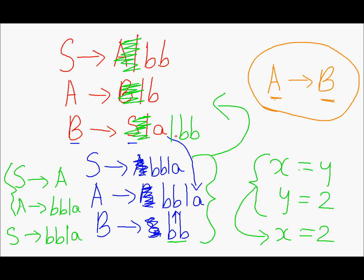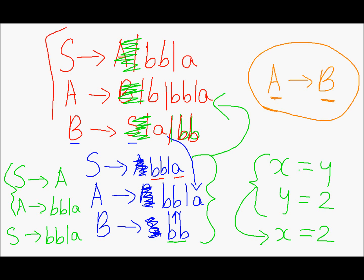So B produces terminal A as well as terminal string BB. Then we have symbol A produces terminal b as well as terminal string BB as well as terminal A. Then we have symbol S produces terminal string BB and terminal A — BB is already there so we just write terminal A. And this is the answer.